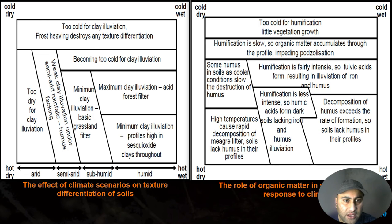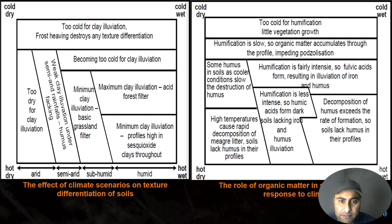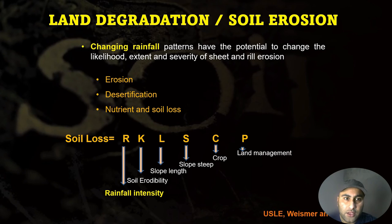Climate change scenarios have different effects on soil texture: hot and dry conditions lead to clay-dominated texture; hot and wet conditions produce different textures; cold and dry conditions lead to illuviation; and frost results in destruction of soil texture. Regarding organic matter: high temperatures may cause rapid decomposition of soil organic matter and humus, while very cold conditions lead to more humification but less nutrient release from organic material, thereby limiting vegetation.